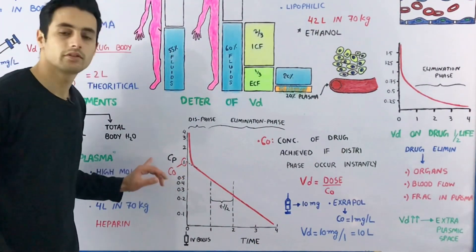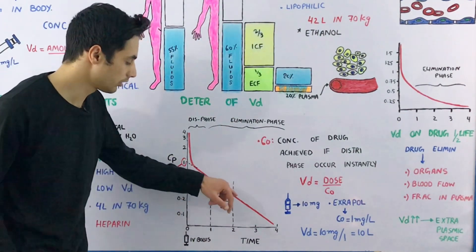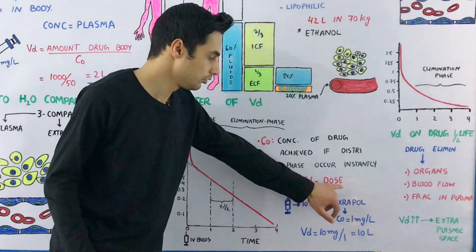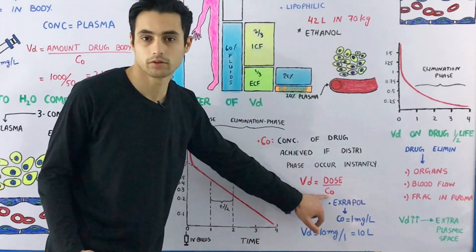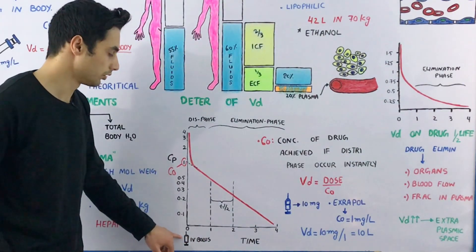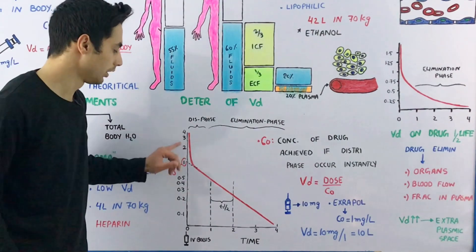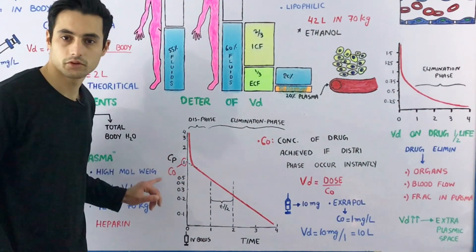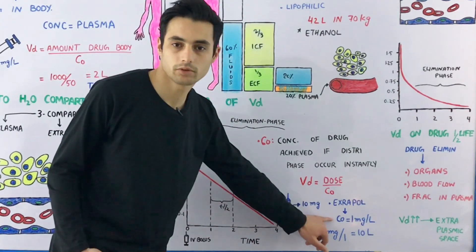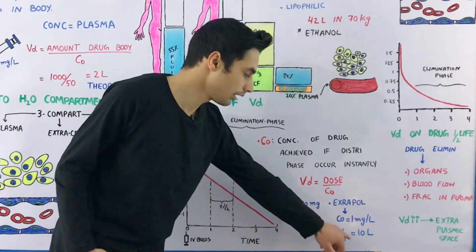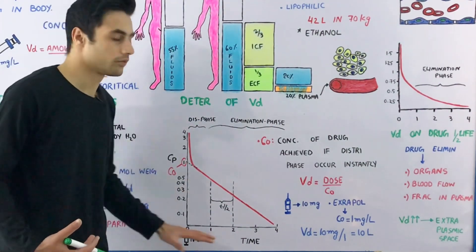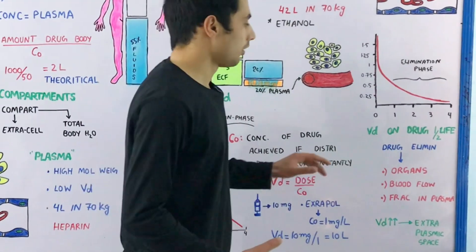You can determine C₀ — the plasma concentration at time zero — by extrapolating this line back to time zero. Using the formula VD = Dose / C₀, you can determine the apparent volume of distribution from the graph. For example, if you inject 10 milligrams of drug as a bolus and by extrapolation you determine C₀ is 1 milligram per liter, then the volume of distribution is 10 liters — meaning you need 10 liters of fluid in your body to maintain that drug concentration.